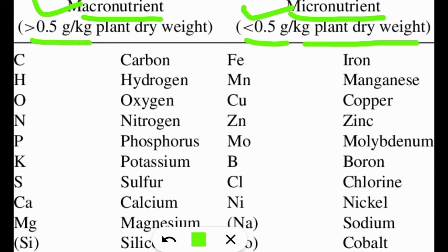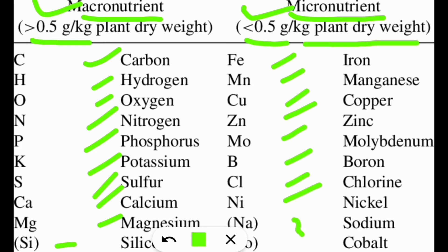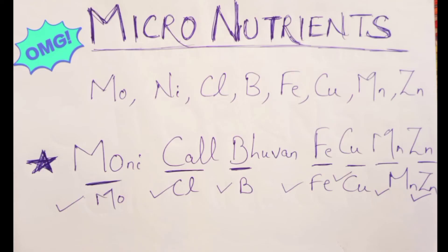The macronutrients are carbon, hydrogen, oxygen, nitrogen, phosphorus, potassium, sulfur, calcium, magnesium, and silicon is also considered. The micronutrients, which are required in less quantity, are iron, manganese, copper, zinc, molybdenum, boron, chlorine, nickel, and sodium. Cobalt is also an essential element, but the core 17 — excluding silicon, sodium, and cobalt — are the important ones. Let's see how to remember all these elements in both categories.